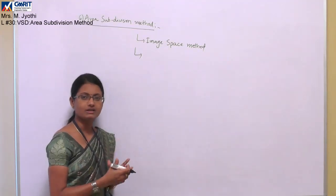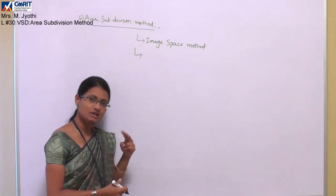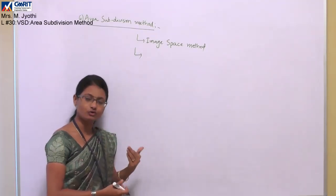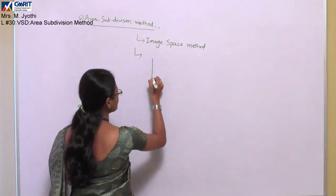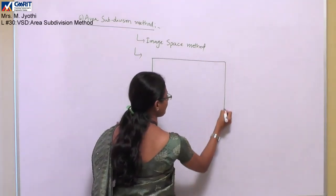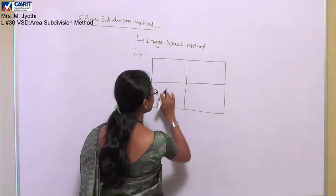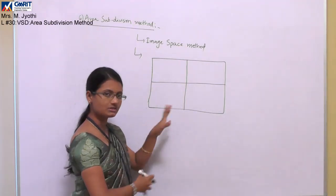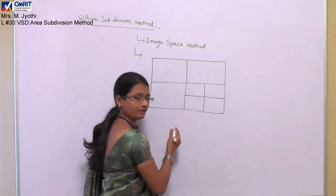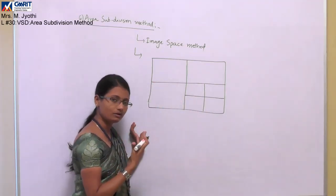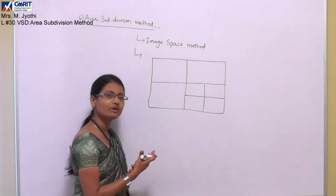The general technique followed in this area subdivision method is to divide the area into four sub-areas, and each individual area can again be divided into four areas, continuing recursively. Suppose you have the complete area — divide it into four areas first and observe all of them. If there are surfaces, divide again. But if there is no surface in an area, there is no requirement to divide it further — you can stop there.